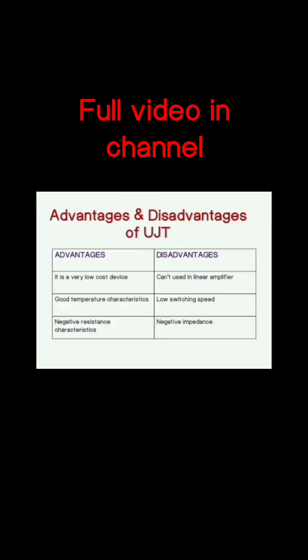This is the voltage-current characteristics of uni-junction transistor. Advantages and disadvantages of UJT: The advantages are it is a very low-cost device, it has good temperature characteristics, and it has negative resistance characteristics. The disadvantages are...